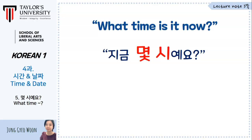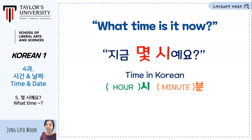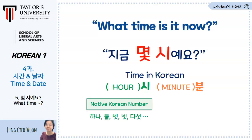To tell the time in Korean, we need to know two expressions: 시 for hour, and 분 for minute. When we mention the hours, we need to use native Korean numbers — 하나, 둘, 셋, 넷, 다섯, and so on. For the minutes, we need to use Sino-Korean numbers such as 일, 이, 삼, 사, 오. If you are not confident in counting yet, please go back to chapter 3 and master the numbers before proceeding.